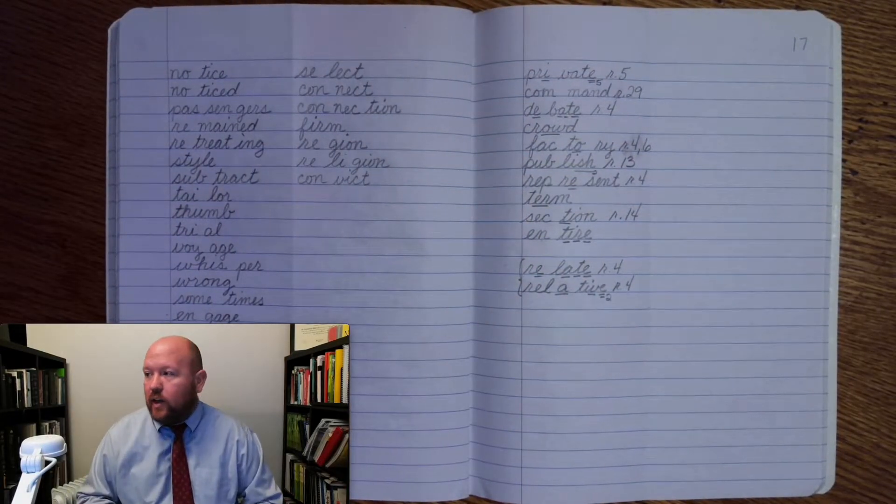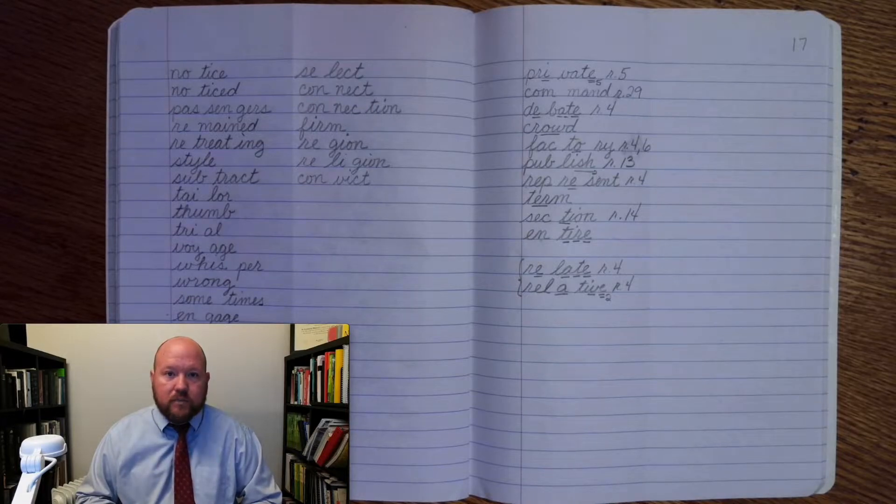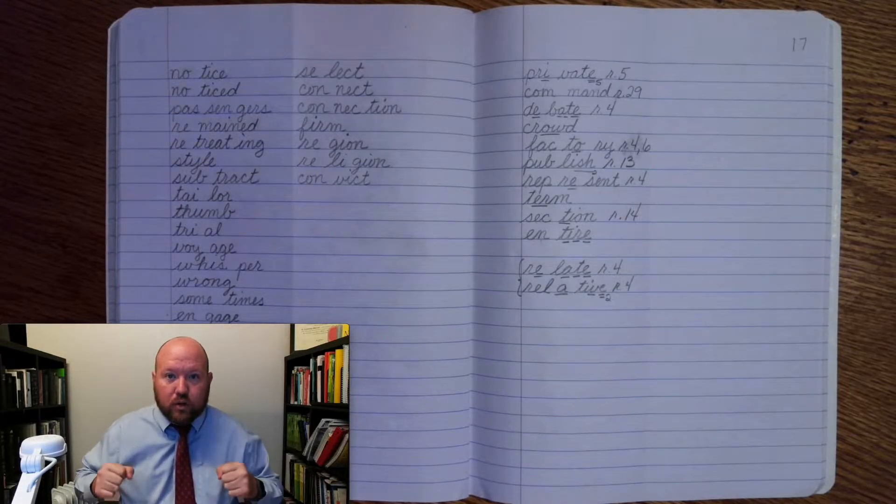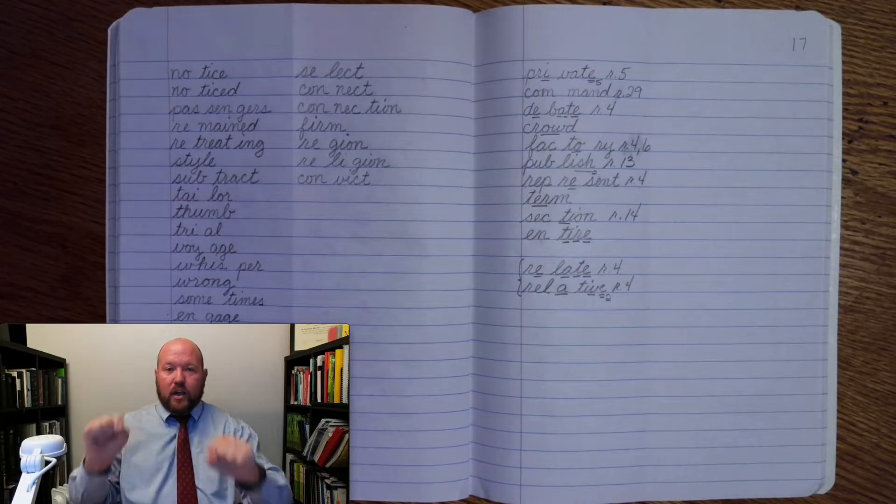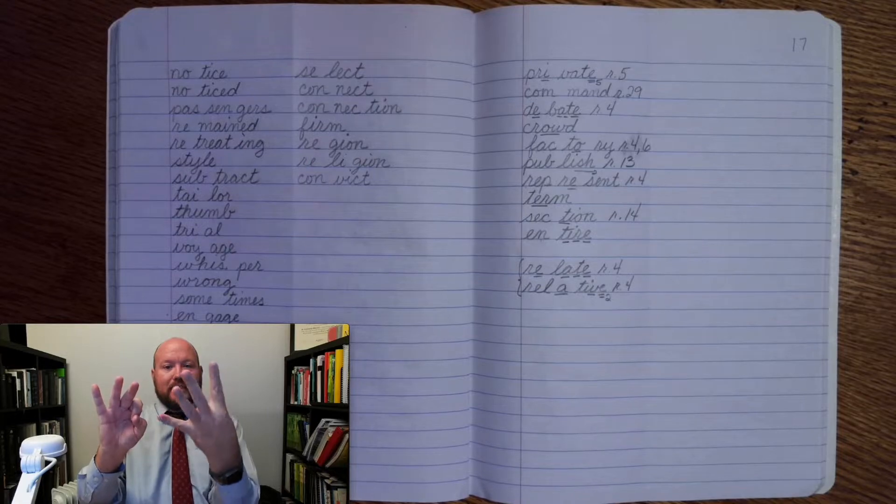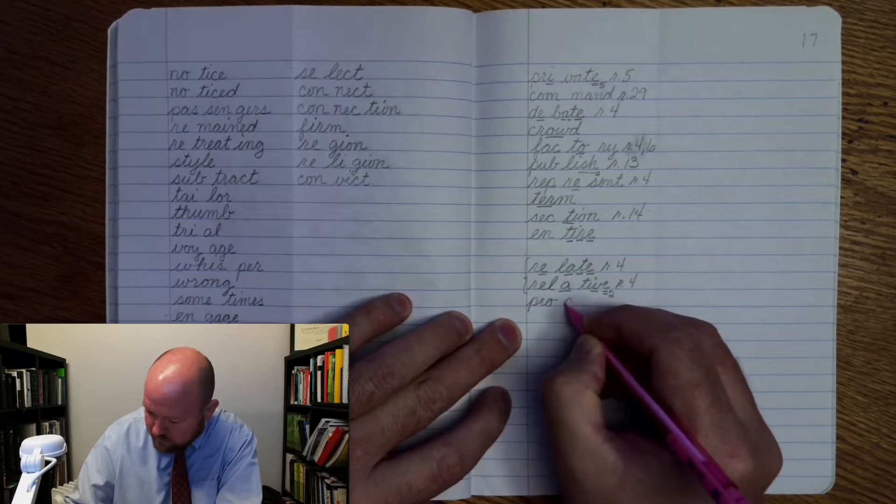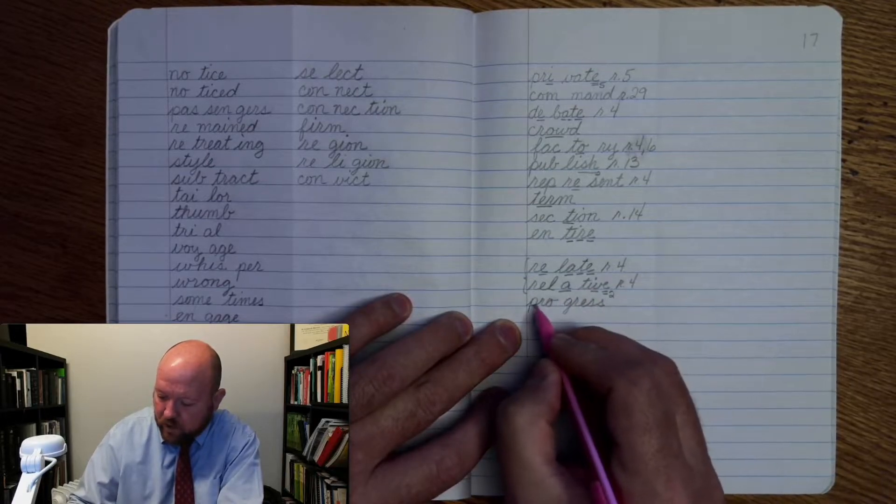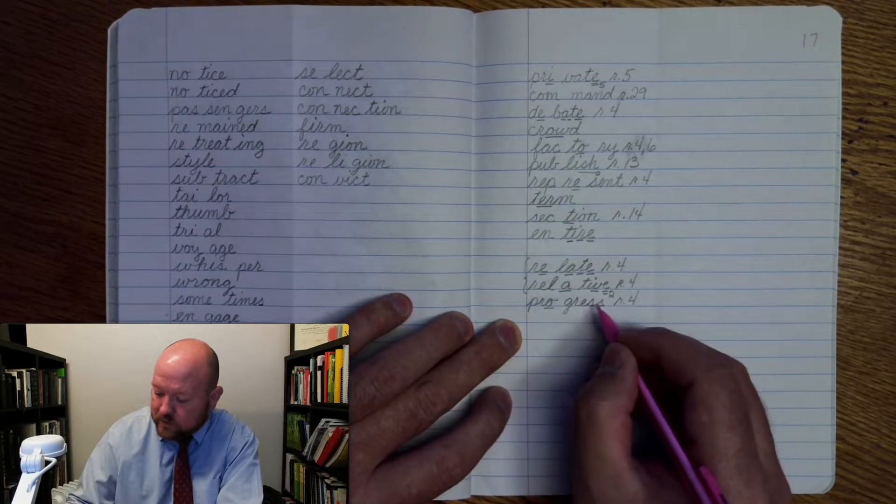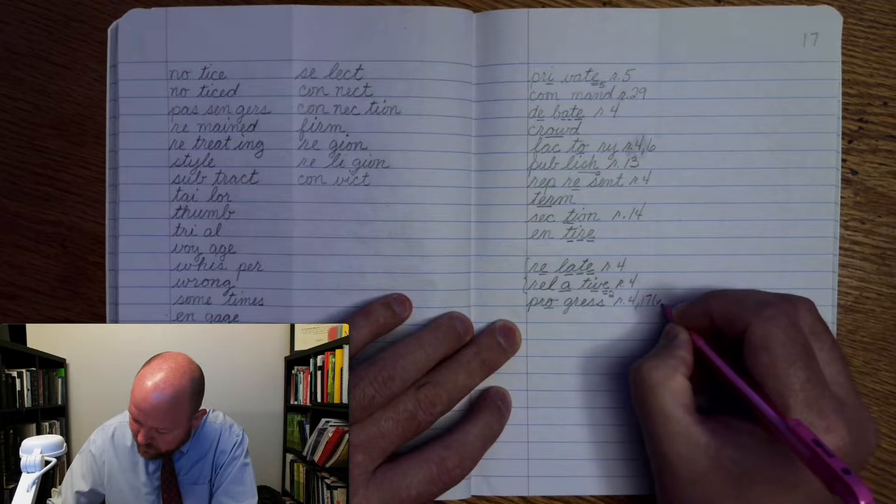Now the next two are going to be spelled the same, but we say them differently. So the next one is progress. Progress is going to be used as a verb. So you need to progress in your studies. You need to keep progressing. Progress. Base word, progress. Pro-gress. P-r-o-g-r-e-ss. Progress. Write progress. Pro-gress. Markings. P-r-o-once. Rule four. G-r-e-ss-ss. Rule 17. I'm going to put a v behind this because it's a verb.